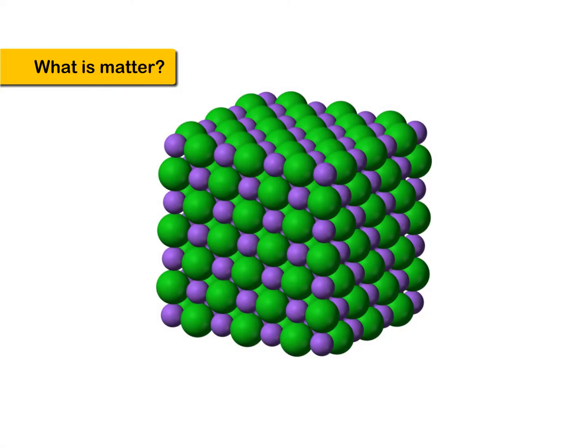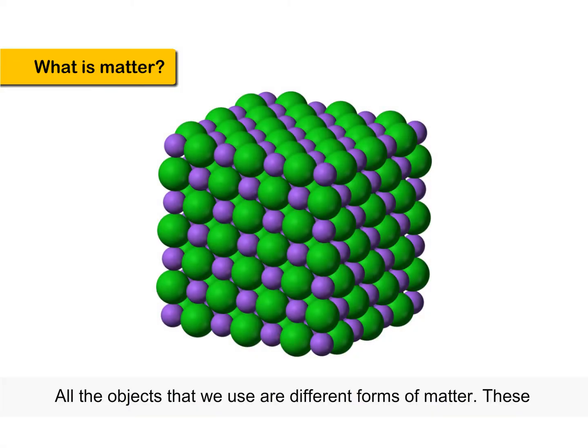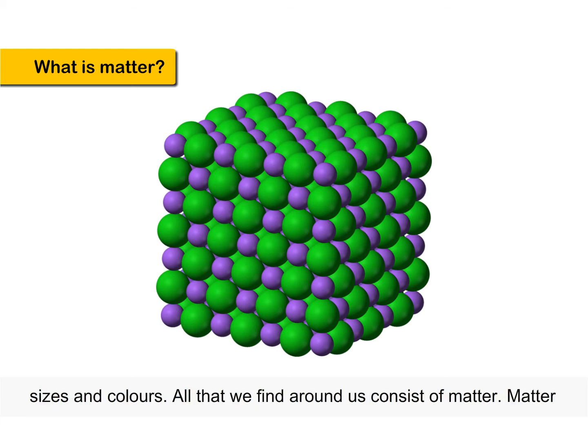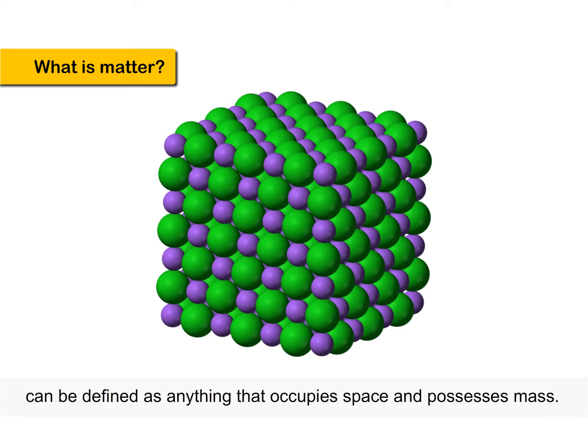What is Matter? All the objects that we use are different forms of matter. These objects have mass, occupy space, and are found in different shapes, sizes and colors. All that we find around us consists of matter. Matter can be defined as anything that occupies space and possesses mass.